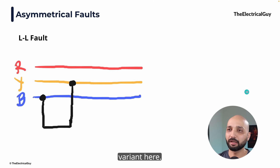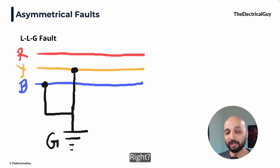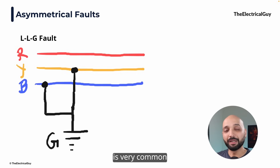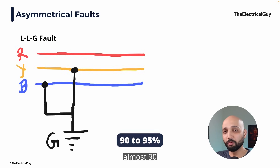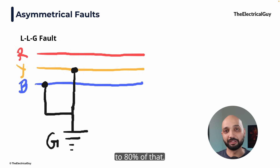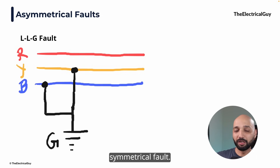There is another variant: the double line to ground fault. In this case, two phases are getting connected to each other and also getting connected to the ground. The occurrence of asymmetrical faults is very common — almost 90 to 95% of the faults seen in the power system are asymmetrical in nature, contributed majorly by the line to ground fault, which accounts for almost 70 to 80% of those. These asymmetrical faults are not as severe as the symmetrical fault we are going to see next.